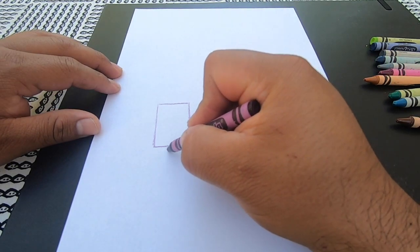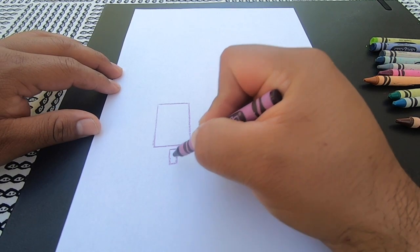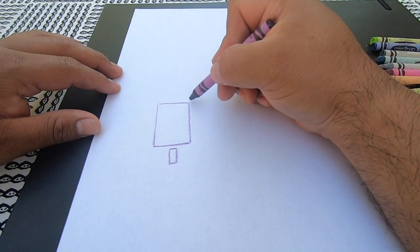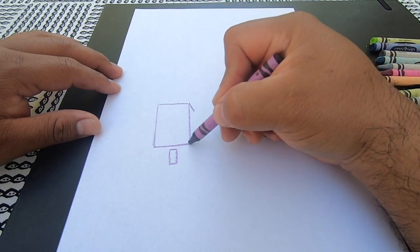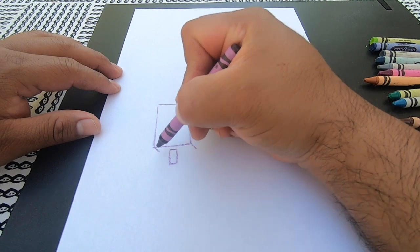We're gonna start this drawing with two rectangles, one large and one small. Then we're gonna add some small angle lines to give the popsicle or the paleta a sense of dimension.